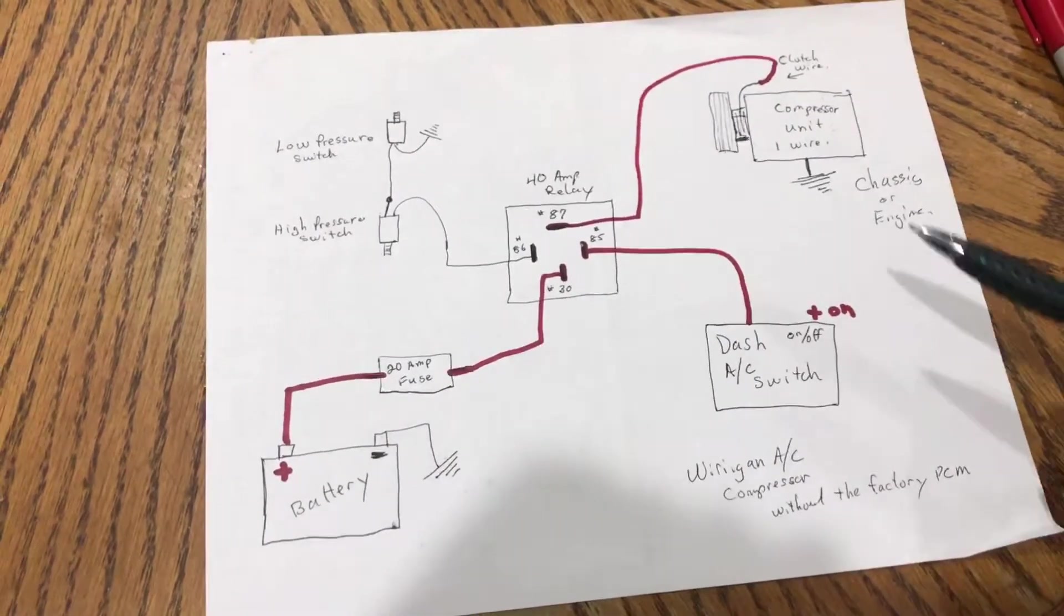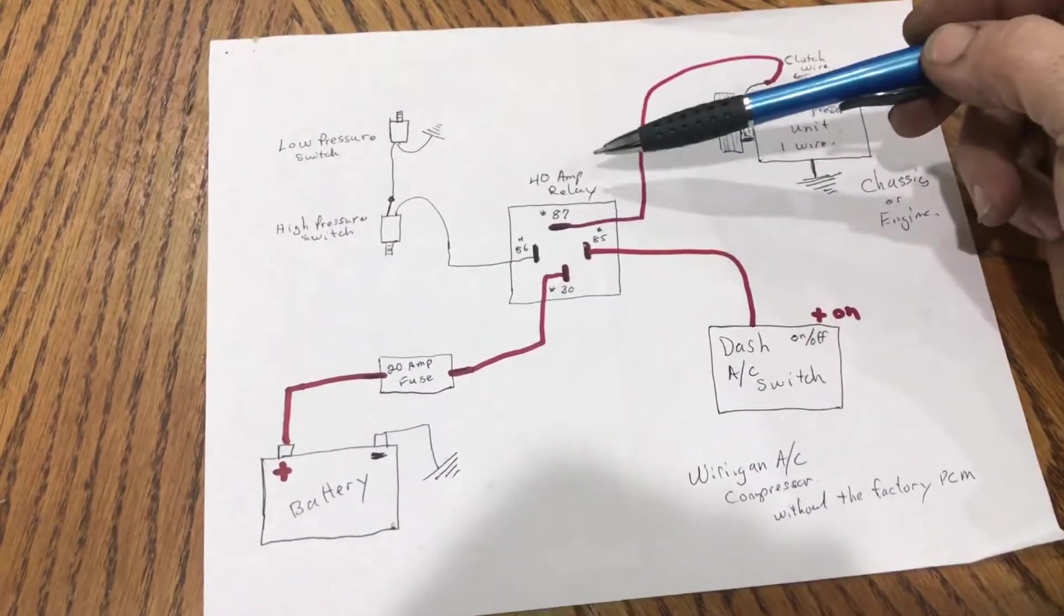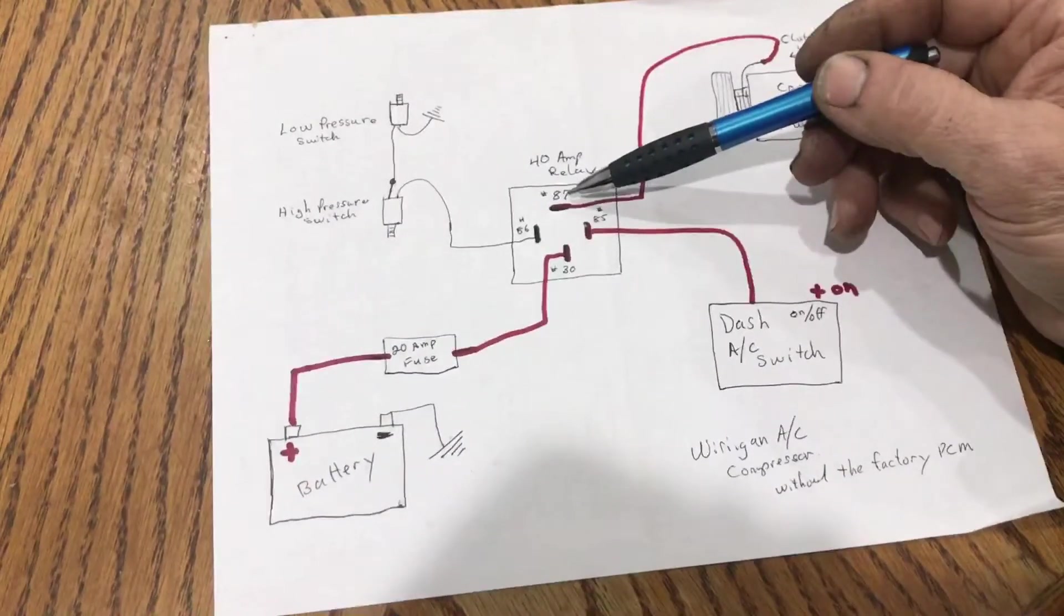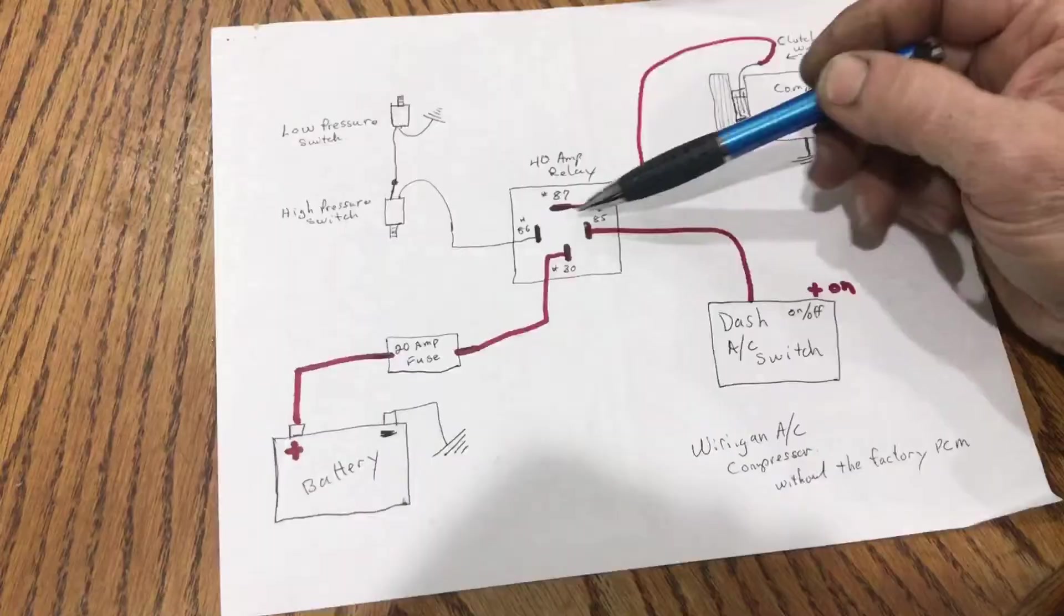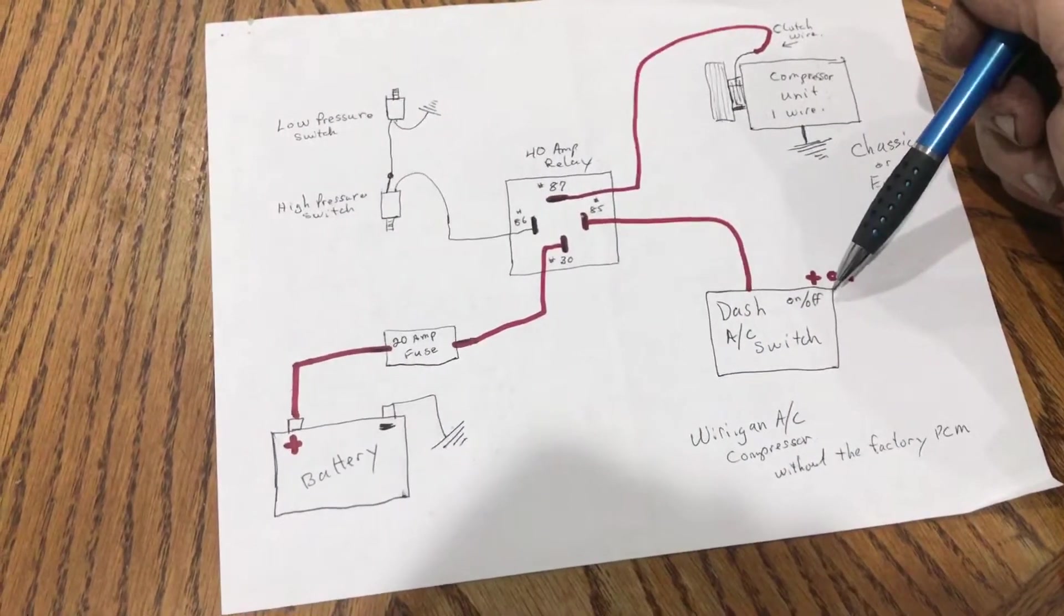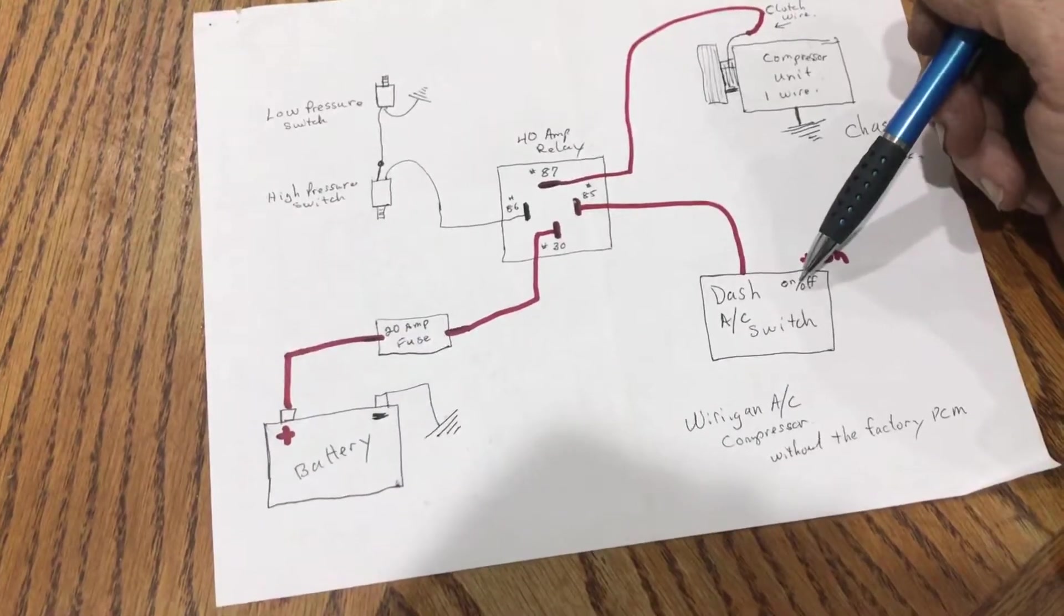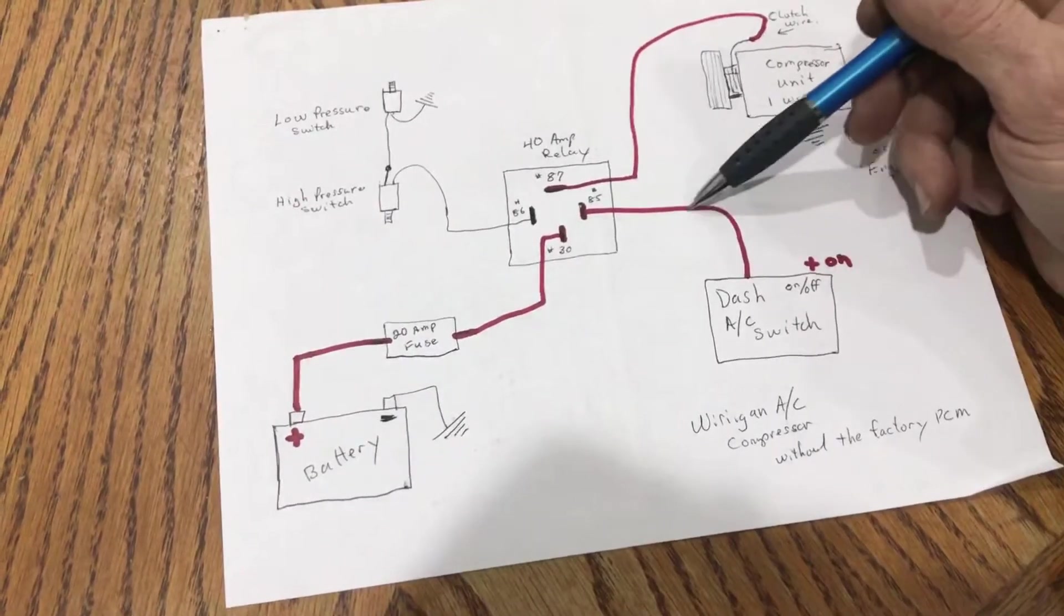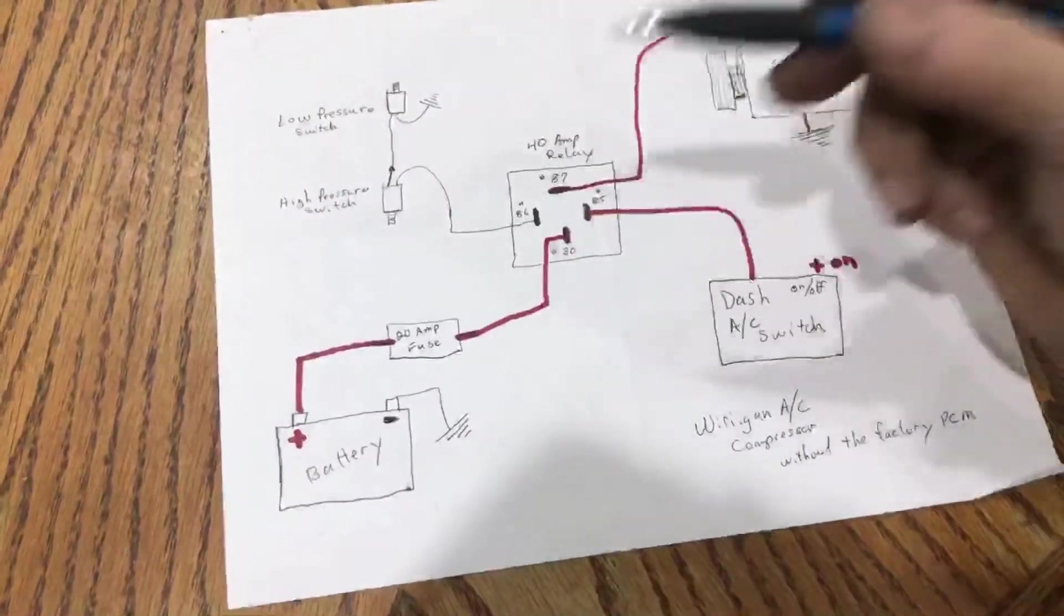This is wired with a high and low pressure switch. You need a 40 amp relay. If you look at the back of the relay, the relays have numbers on them: 87, 85, 86, and 30. The switch on your dashboard or toggle switch is how you activate your air conditioner. When you put the air conditioner on, it's got to be positive.